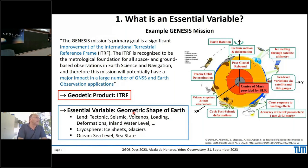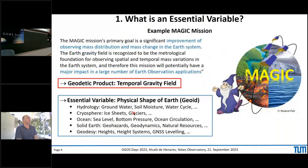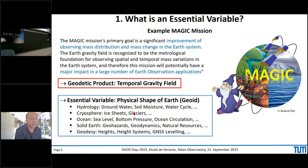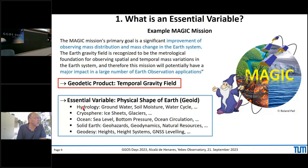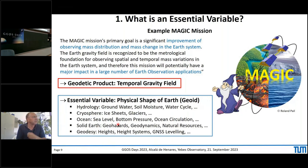The second example is about the gravity mission — for example MAGIC — presented this morning. What we deliver is temporal gravity field. But is that the essential variable? In my view, no. I renamed it: the essential variable is 'physical shape of the earth,' or you may call it the geoid. This addresses many other items listed below, which are linked to this variable, showing we contribute to many earth system components.